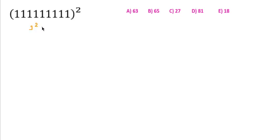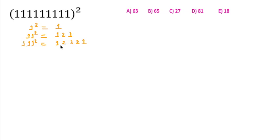We know 1² is 1, and 11² is 121, and 111² is 12321. You will see there is a pattern: for 11² (2-digit 1s) the digits go 1, 2, then decreasing. For 3-digit 1s squared you get 1, 2, 3, then decreasing back to 1. For 4-digit 1s squared: 1, 2, 3, 4, then decreasing 3, 2, 1. For 5-digit 1s: 1, 2, 3, 4, 5, then decreasing 4, 3, 2, 1.